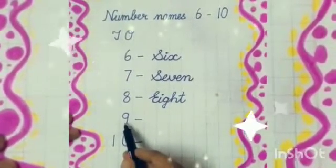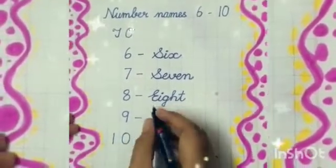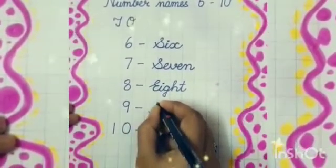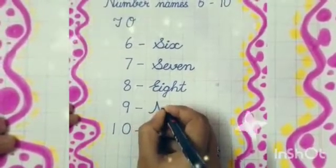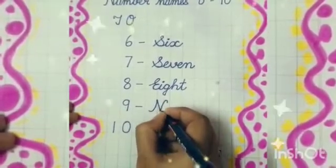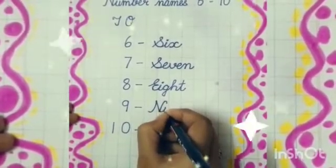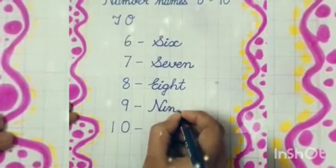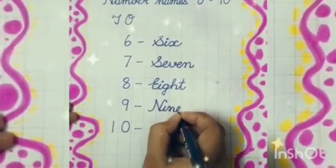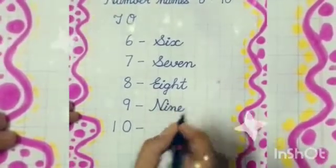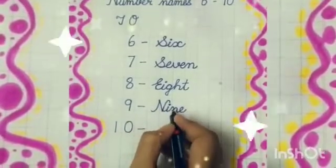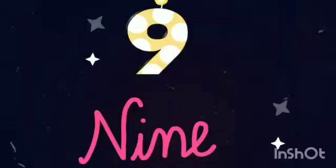Now we will write 9. N-I-N-E, 9. N-I-N-E, 9. N-I-N-E, 9.